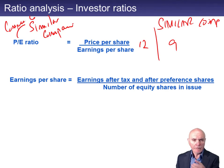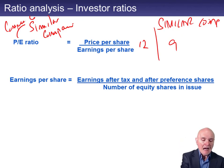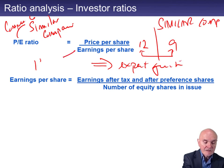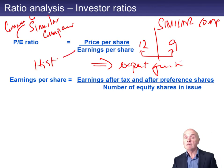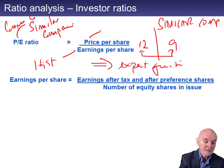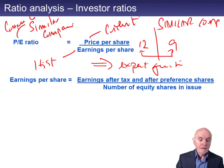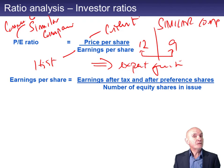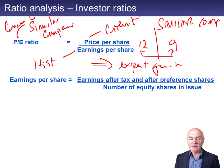A high PE ratio compared to similar companies must mean that investors expect growth. Because the earnings per share are historical — last year's earnings per share — but the price per share is current. So the current price per share should reflect future earnings, not past earnings. And that's maybe what investors have their eye on. In a way, this almost distorts what the PE ratio seems to be saying.